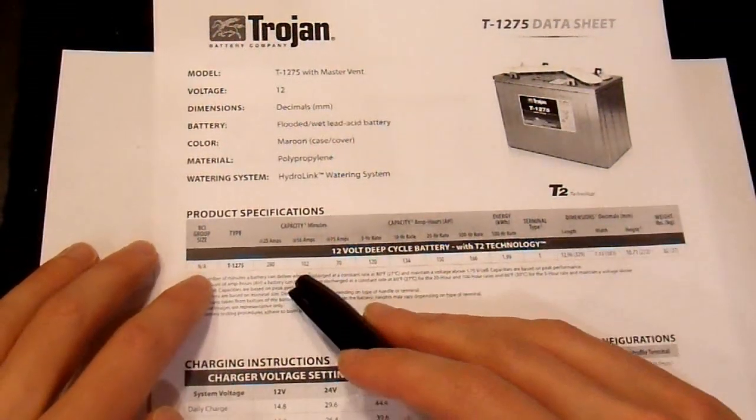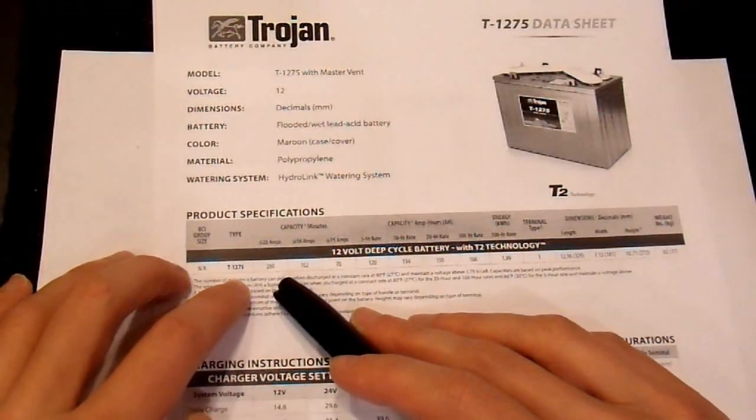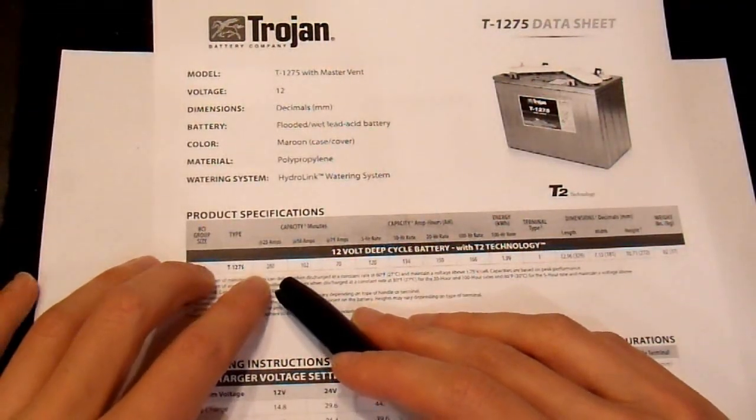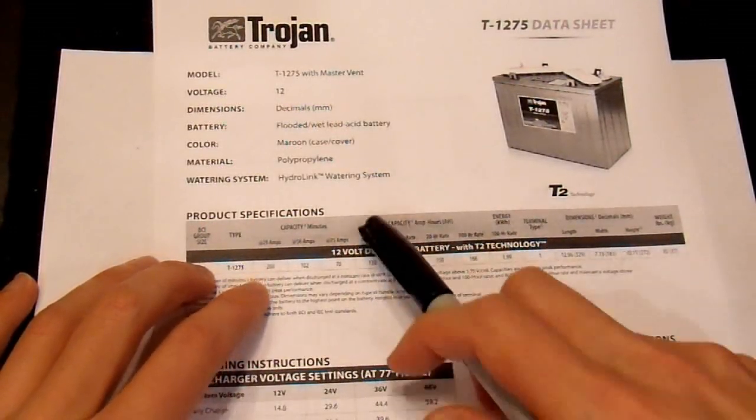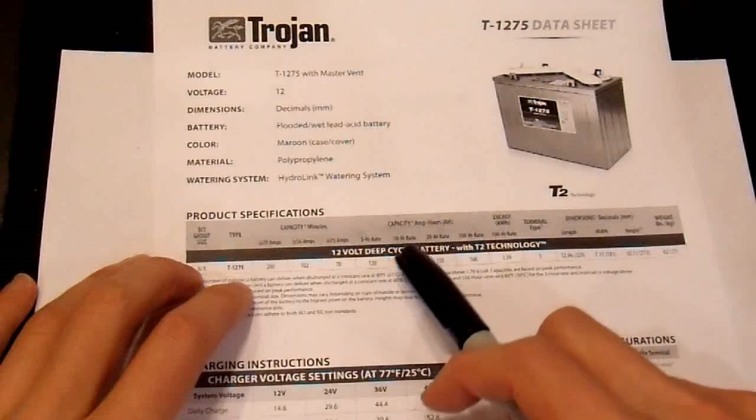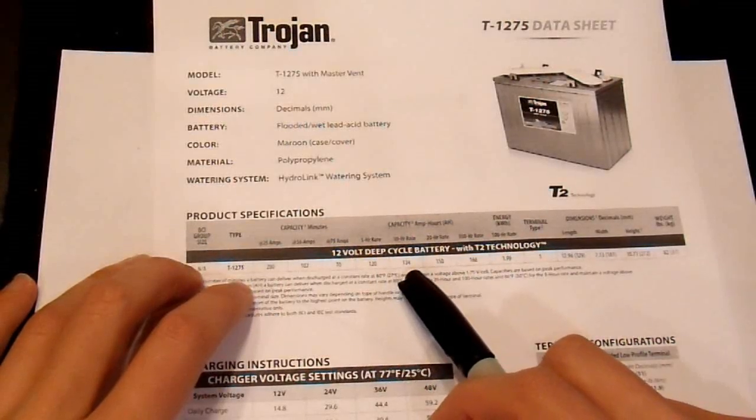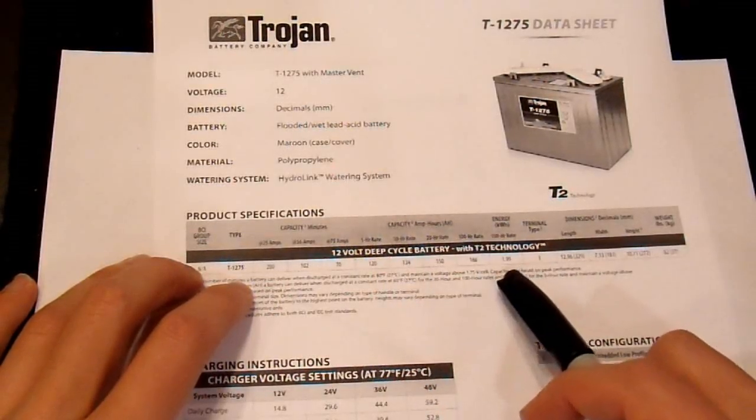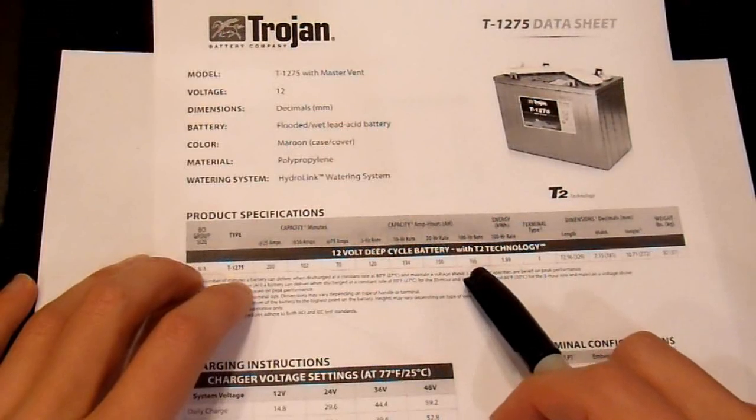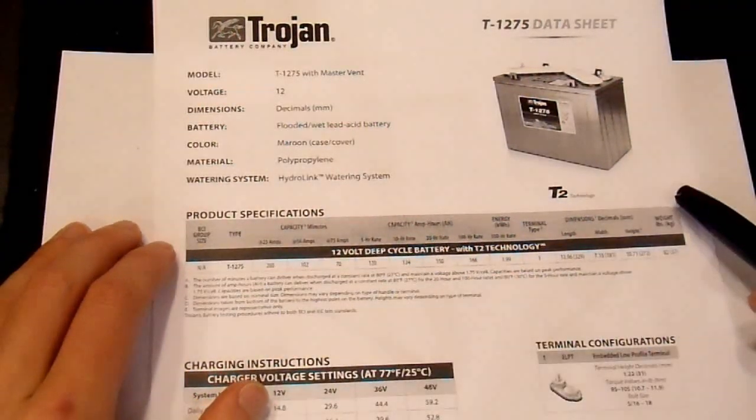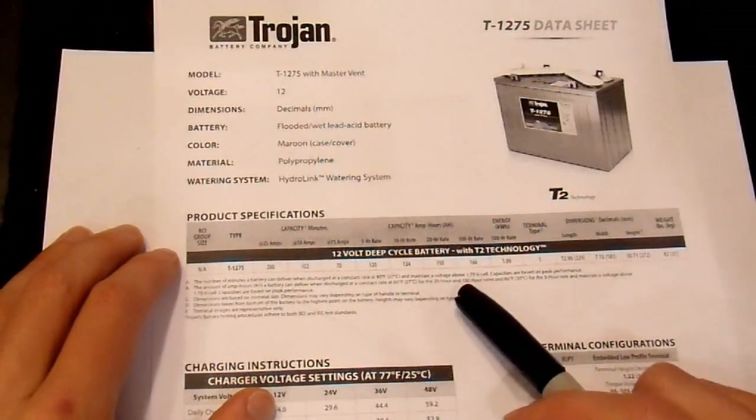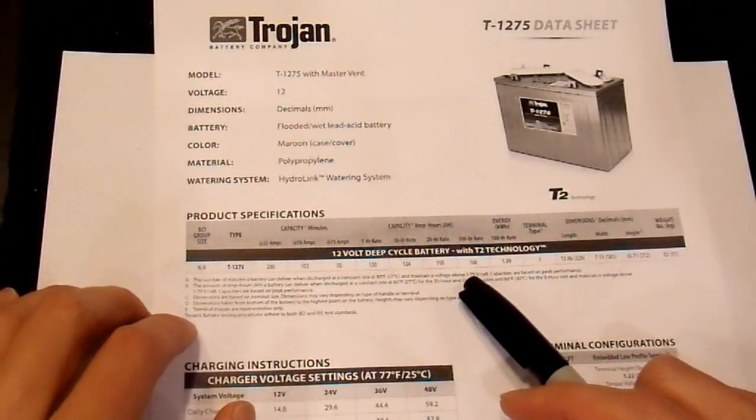So you take a look at their ratings here, and they do give you pretty useful information. They give you the amp hour capacity at different rates. At the 5-hour rate, you get 120 amp hours. At the 10-hour rate, you get 166 amp hours. So the data sheet here on this battery seems to claim that the amp hour capacity depends on the discharge rate.